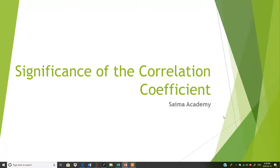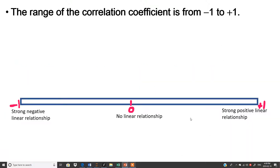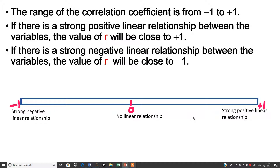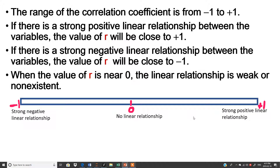In this lesson, I will explain to you the significance of the correlation coefficient. We discussed in the last lesson how to calculate it. The range of the correlation coefficient is from negative 1 to positive 1. If there is a strong positive linear relationship between the variables, the value of r will be close to positive 1.